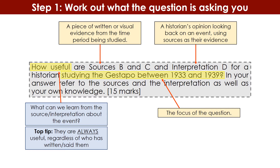Another common mistake is saying: 'This was written in 2015, so we can't trust it because it's not from the time.' No — that historian has done a lot of research and is a professional; their work is incredibly useful because they will be able to tell you something about the specific event. It's your job to work out what they are telling us about the focus. Top tip: always useful.